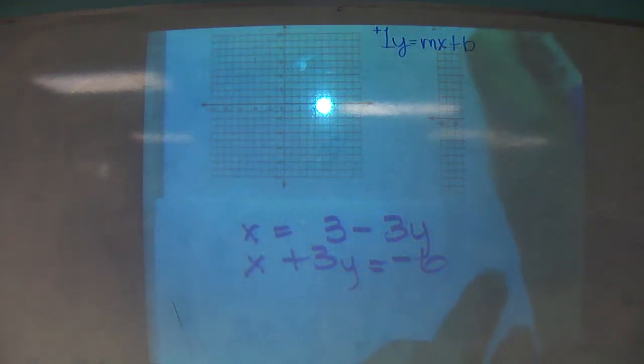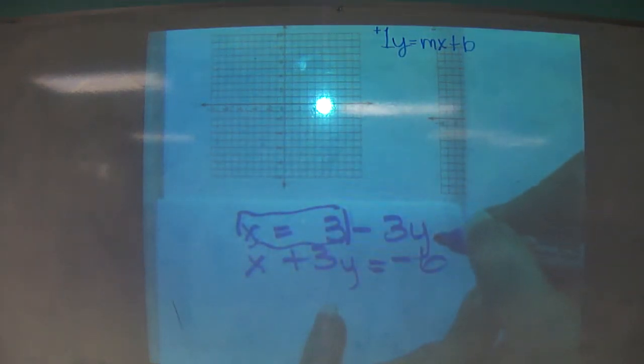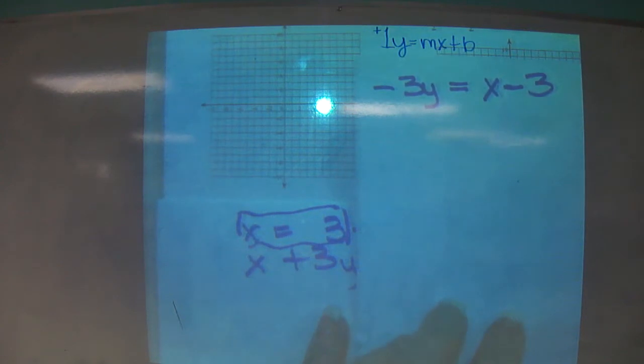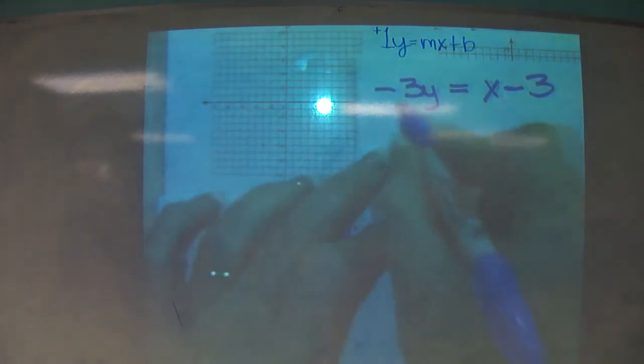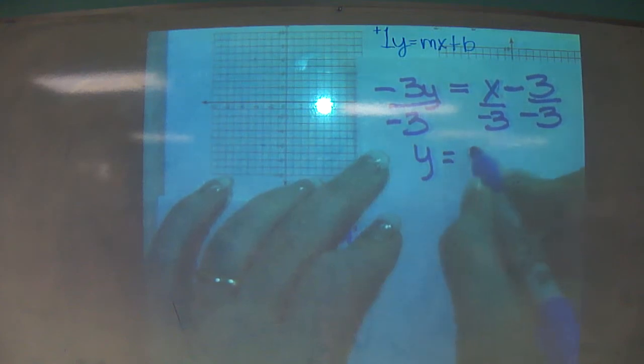Rearrange it. So, I'm going to do negative 3y equals... I'm literally just taking this. I put 3y by itself, and I've got equals x, and I move 3 to the other side. Everybody see what I did? I added negative 3 to both sides and moved it to the other side. How do I get 1y by itself? Divide everything by negative 3.